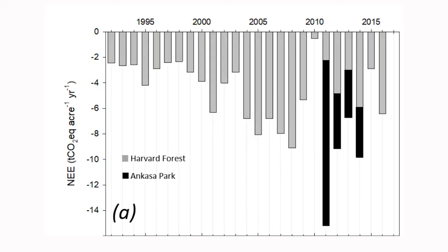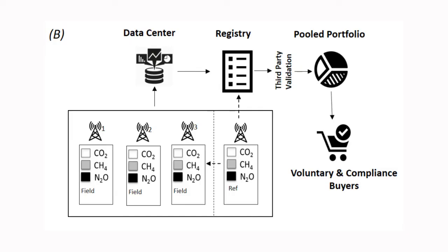When pooled in a portfolio, these projects offer unique benefits and a buffer to risk. For example, while the Harvard Forest NEE was severely reduced by drought in 2010 to about 0.59 tons of CO2 equivalent per acre, the Ancasa site in 2011 — the first year of that time series — sequestered a whopping 15.2 tons CO2 equivalent. Taken as a pooled portfolio, the Ancasa NEE buffered the Harvard Forest loss in NEE.